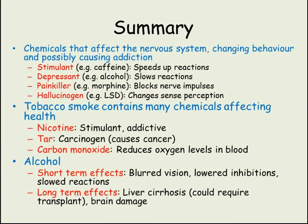In summary, drugs are chemicals that affect the nervous system causing a change in behaviour. Stimulants, such as caffeine, speed up reactions. Depressants, such as alcohol, slow reactions. Painkillers, like morphine, block nerve impulses. And hallucinogens, such as LSD, change the way we perceive what's happening around us. Several chemicals in tobacco smoke have an effect on health: nicotine is addictive and acts as a stimulant, tar causes cancer, and carbon monoxide reduces the amount of oxygen being carried by the blood. Alcohol has several short and long-term effects. In the short term it leads to blurred vision, reduced inhibitions and slower reactions. Long-term abuse of alcohol can lead to liver cirrhosis, possibly requiring a transplant, and brain damage.